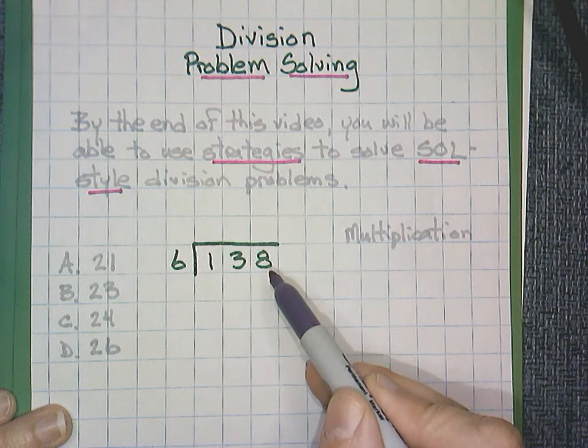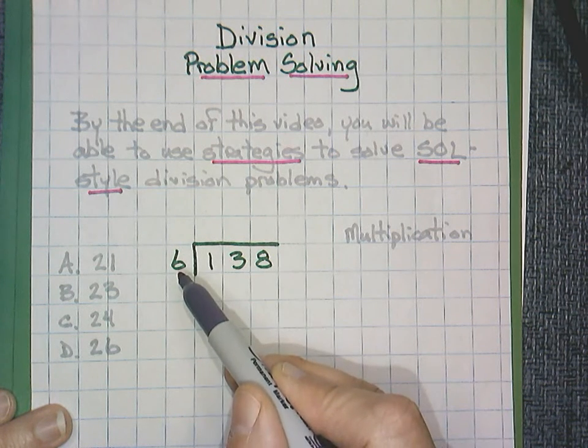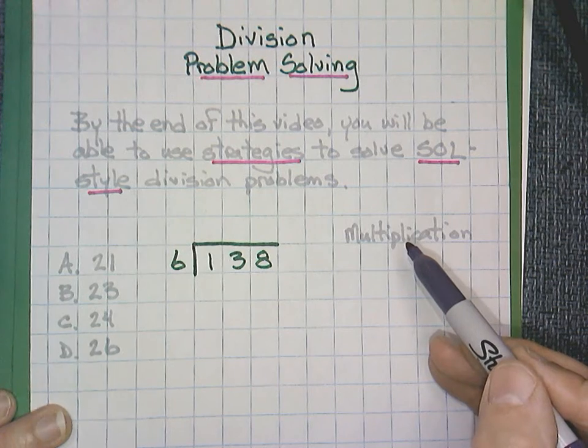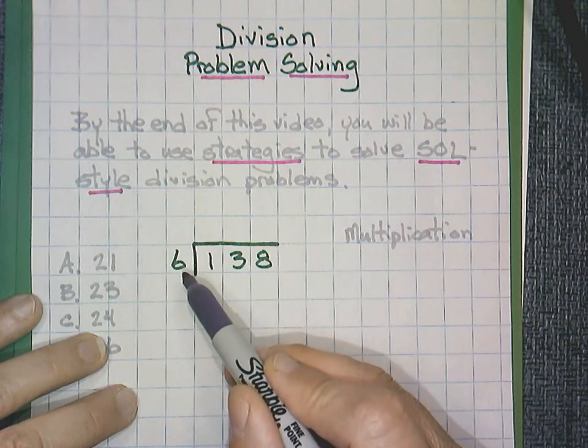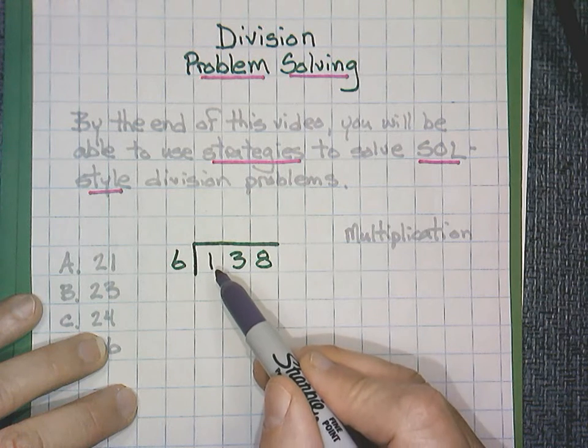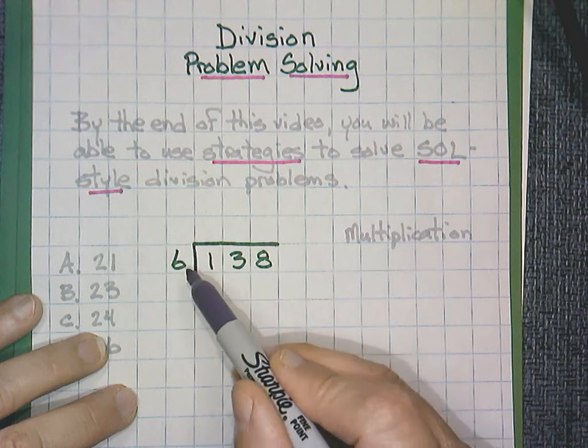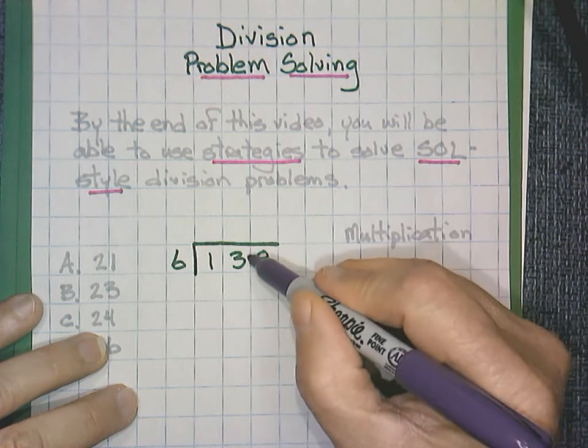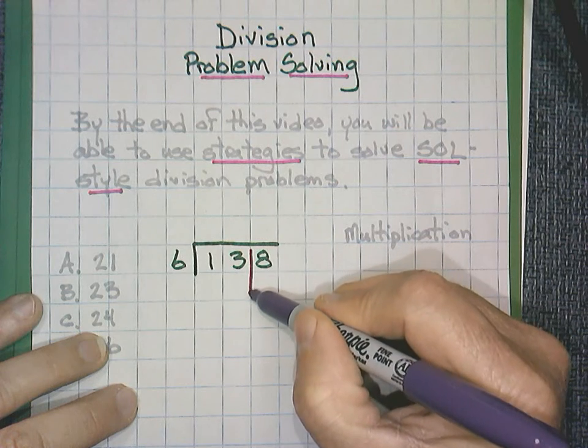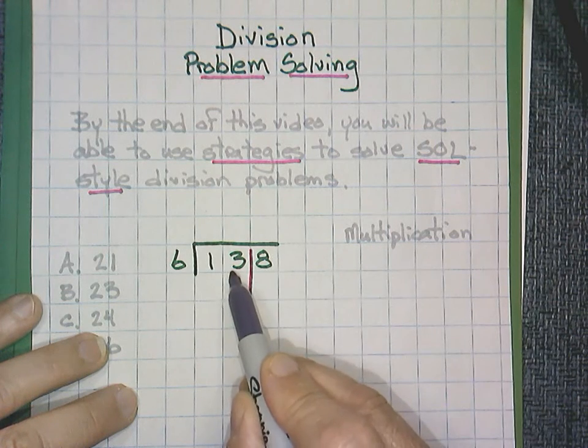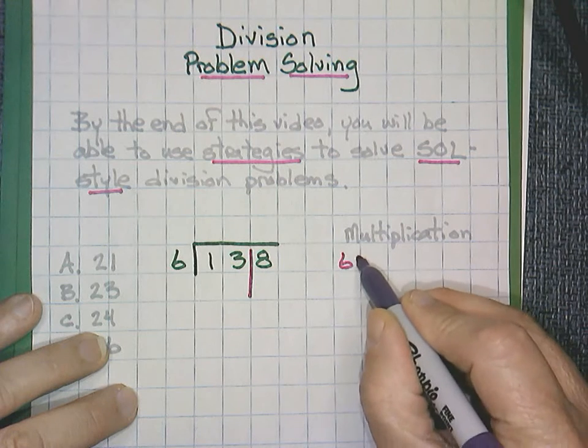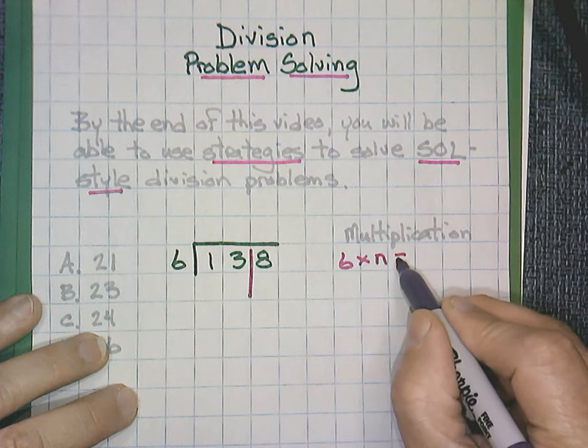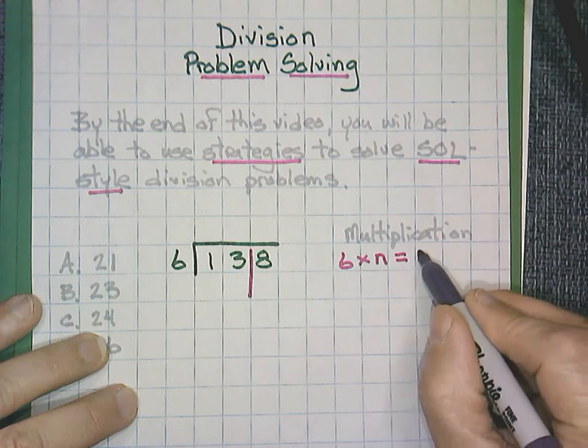138 divided by 6. Let's use a strategy where we're using multiplication equations to solve. We work from left to right, digit by digit. 6 does not go into 1, but 6 can go into 13. I'm going to focus on the 13.